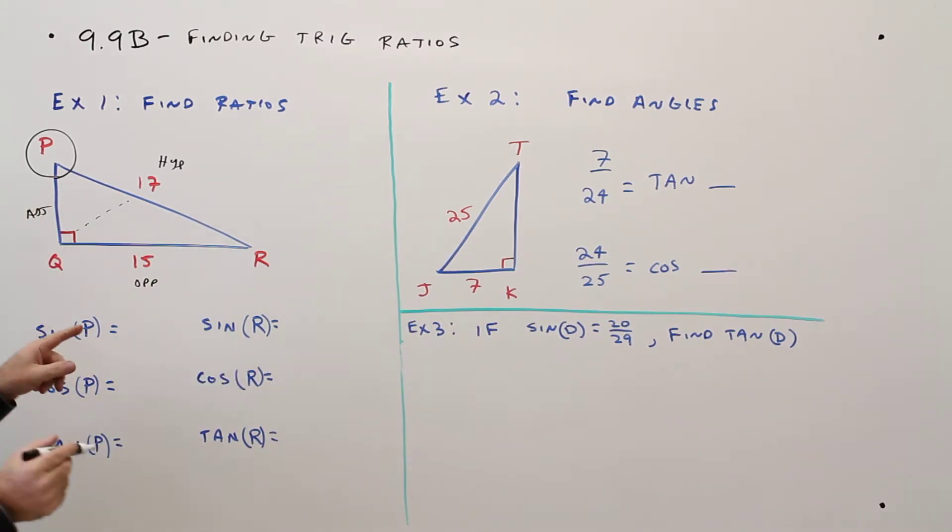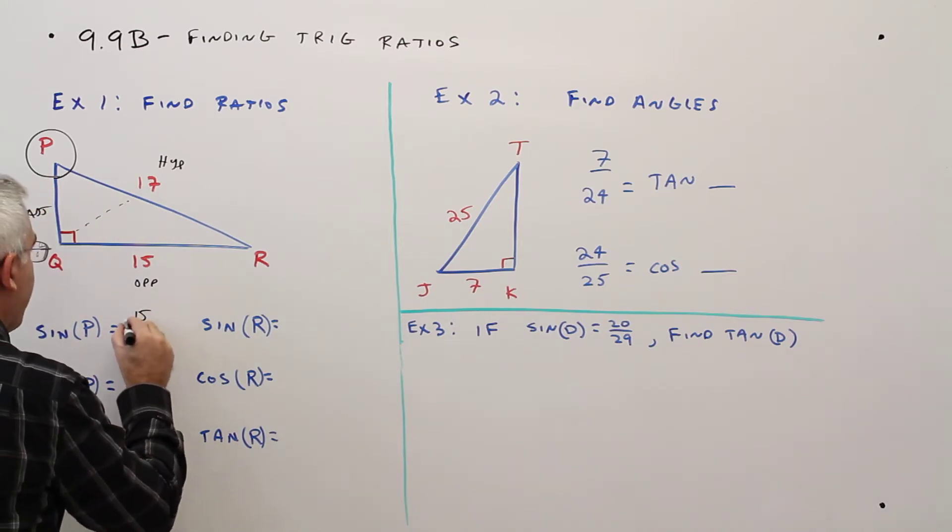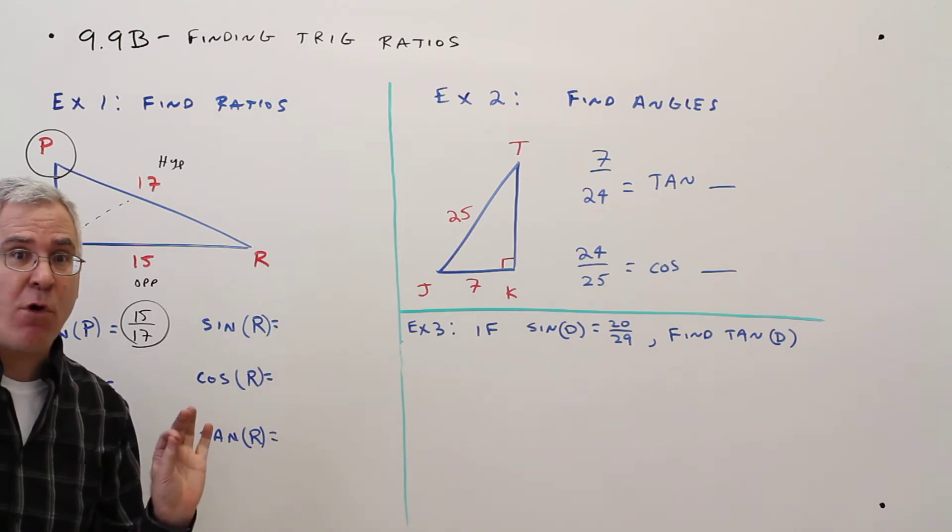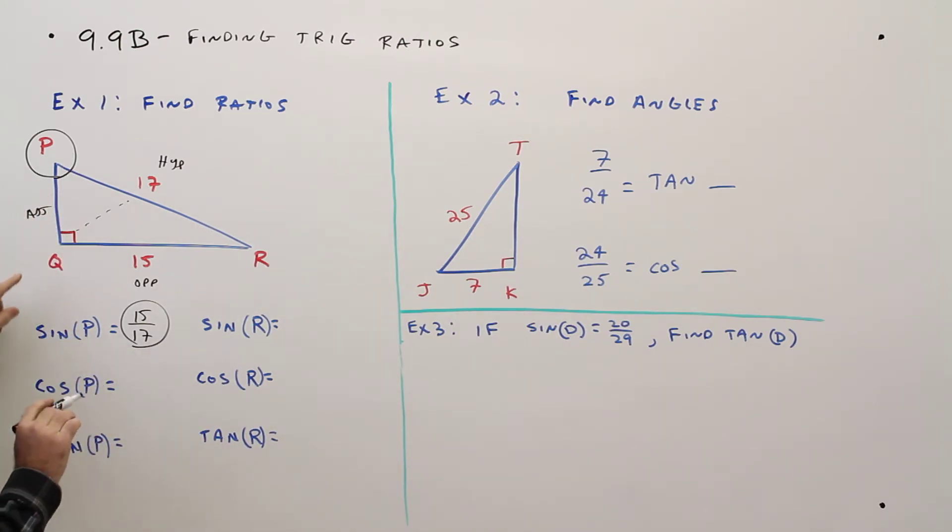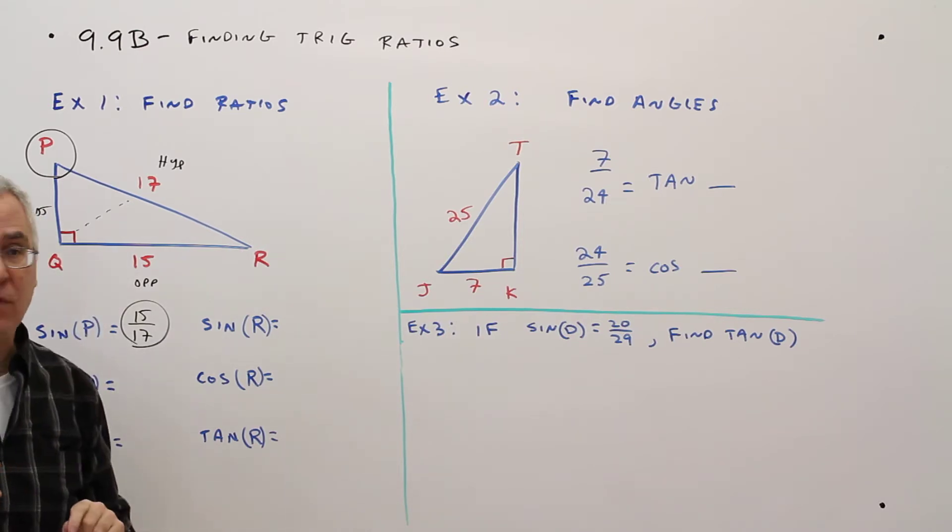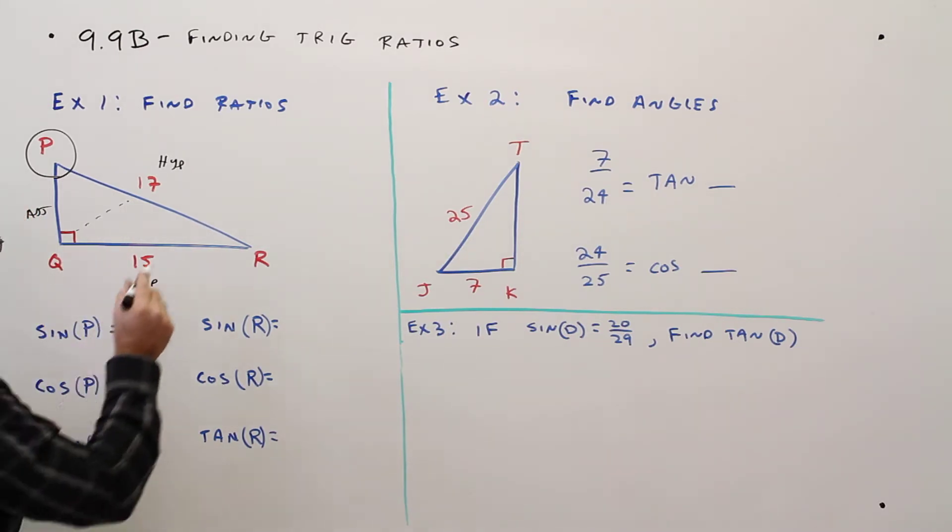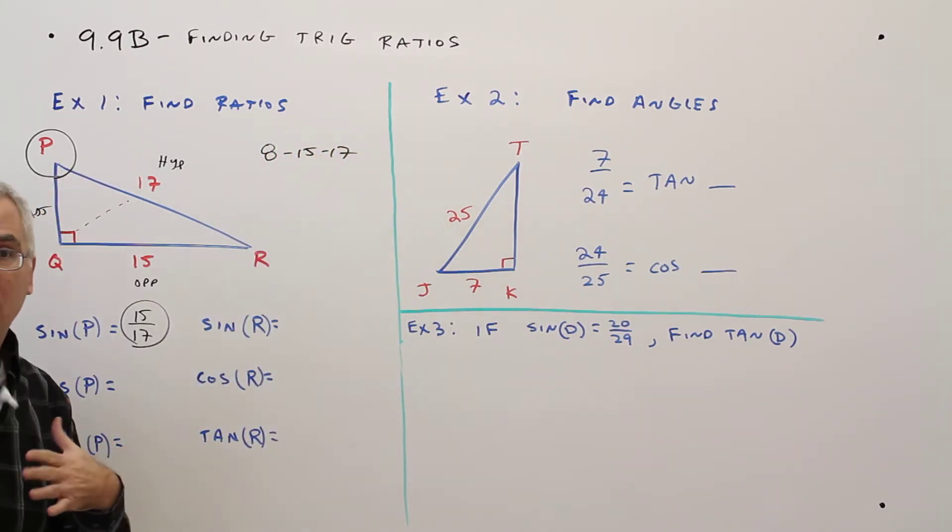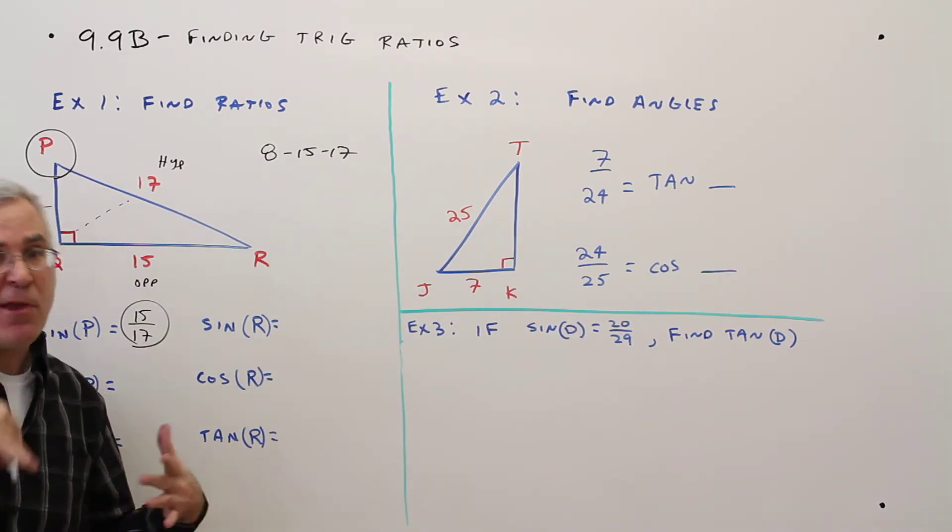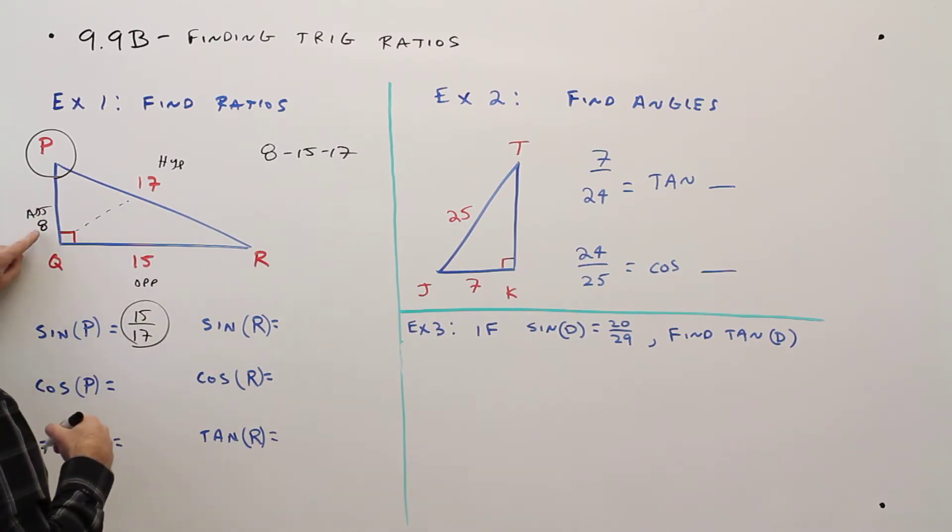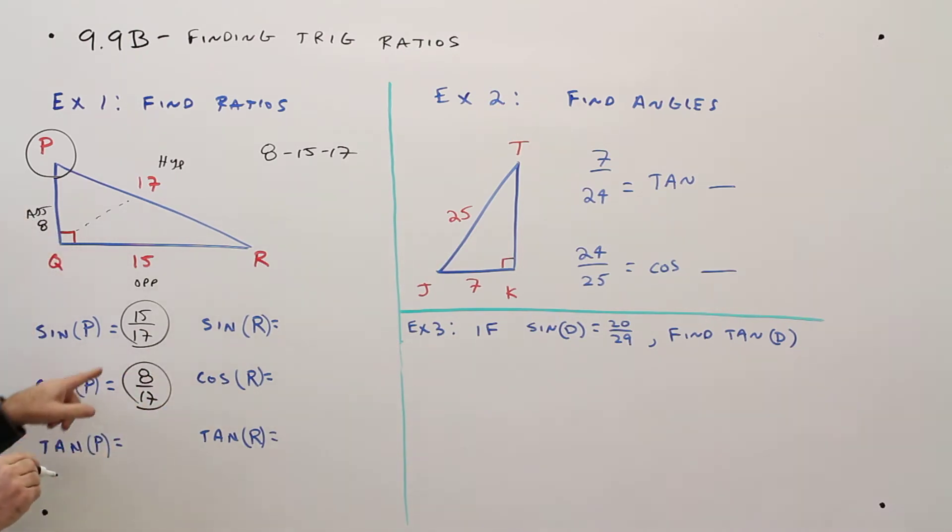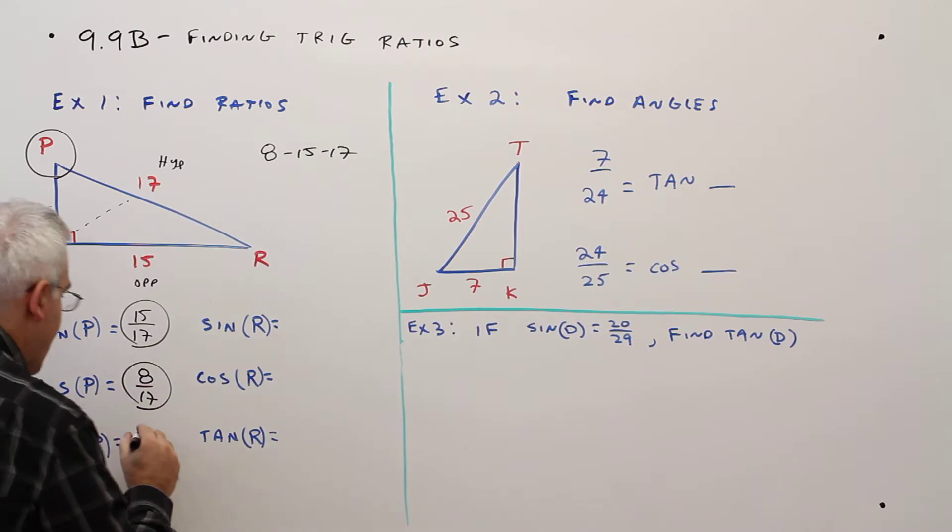Alright, so the sine of P. SOHCAHTOA, opposite over hypotenuse, 15 over 17. Just leave your answers in exact simplified form for these types of problems. Cosine of angle P, I don't have the adjacent, but I happen to know the 8, 15, 17 Pythagorean triple, so this has a side length of 8. If you forgot that, you could have used the Pythagorean theorem, just takes a little bit longer. So adjacent over hypotenuse, 8 over 17. Tangent of P, opposite over adjacent, 15 over 8.